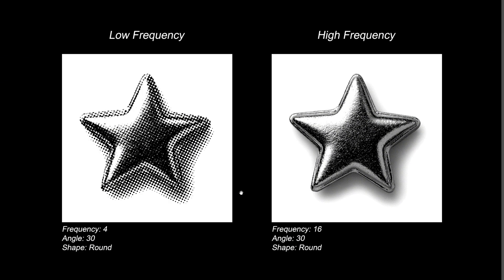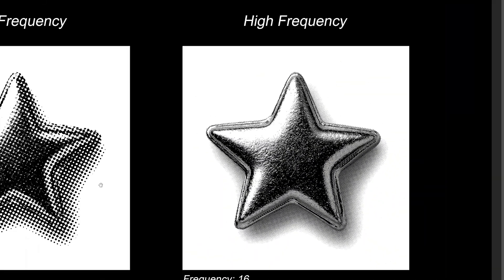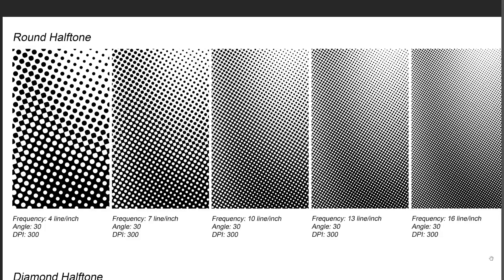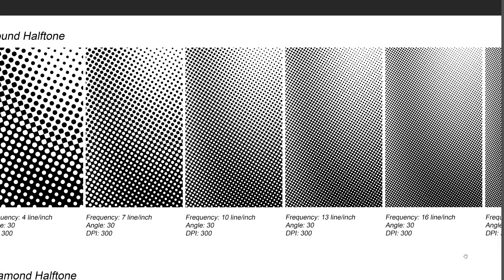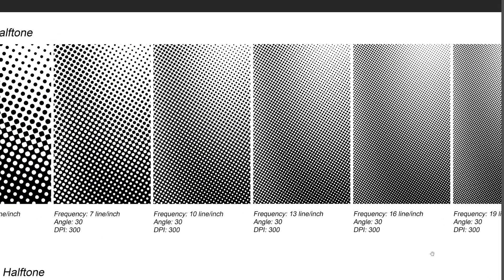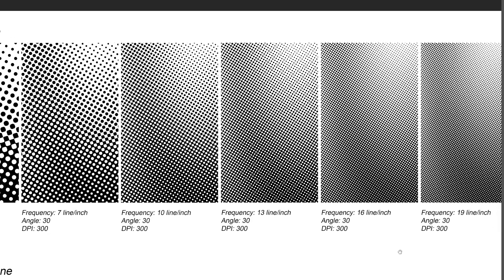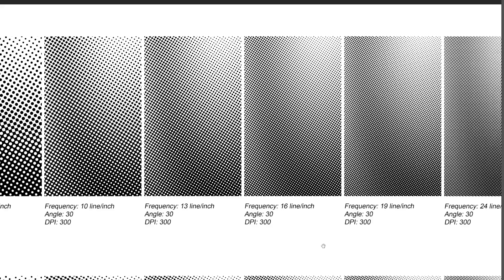Frequency in halftone determines how close or far apart the dots are. Higher frequency packs the dots tightly, giving a finer, more detailed look — perfect for smooth gradients and intricate designs. Lower frequency spreads the dots out, creating a bold, chunky, vintage style. The frequency you choose can really impact the design's vibe, whether you want sharp detail or retro texture. As for angle, feel free to experiment — changing the angle can add even more uniqueness to your halftone effect.